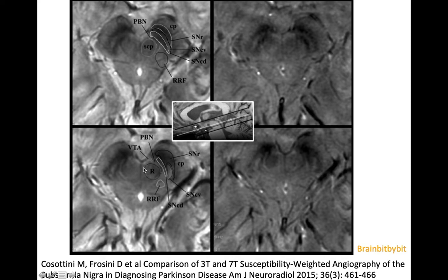On 7 tesla, at the lower midbrain level, you can also see hyperintense signal of the dopaminergic neurons of the ventral tegmental area, which connects to the limbic system.